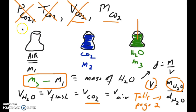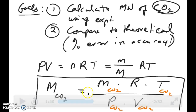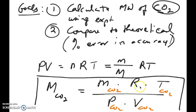Now you have all four parameters: pressure, temperature, volume, and mass. From there we can determine our molar mass. As a reminder, the molar mass equation uses mass, temperature, pressure, and volume — all those experimental parameters — as well as R, the ideal gas constant.